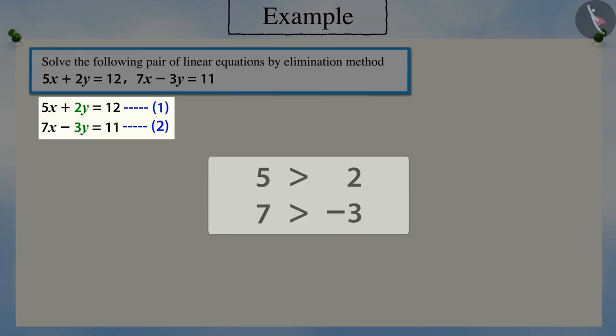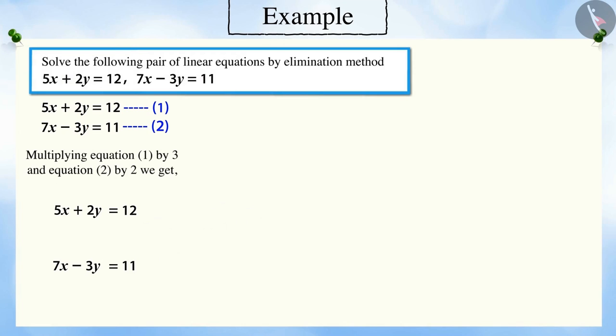To make the coefficient of the variable y equal, we need to multiply equation 1 by 3 and equation 2 by 2, after which we get equations 3 and 4.